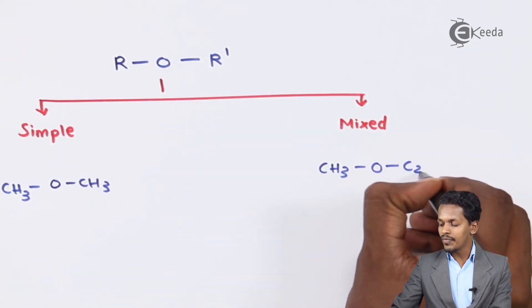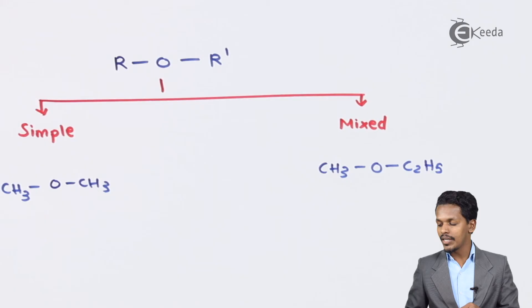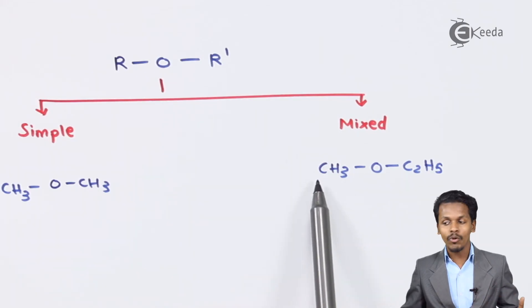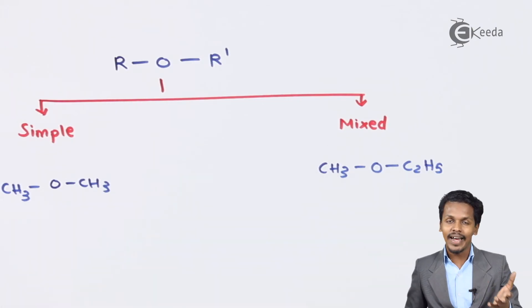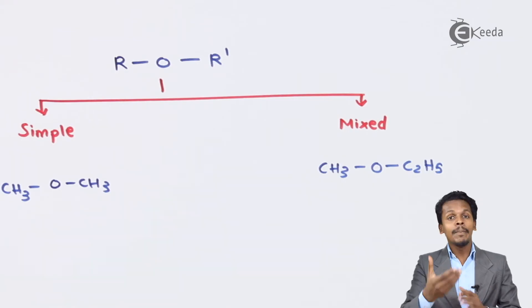If I talk about mixed ether, then one of the alkyl groups would be different compared to the other one. For example, if I'm mentioning over here methoxy ethane, in this case as you could see this is a methyl group while this is the ethyl group. So both the alkyl groups are different, and based on this, this is the classification of ether.